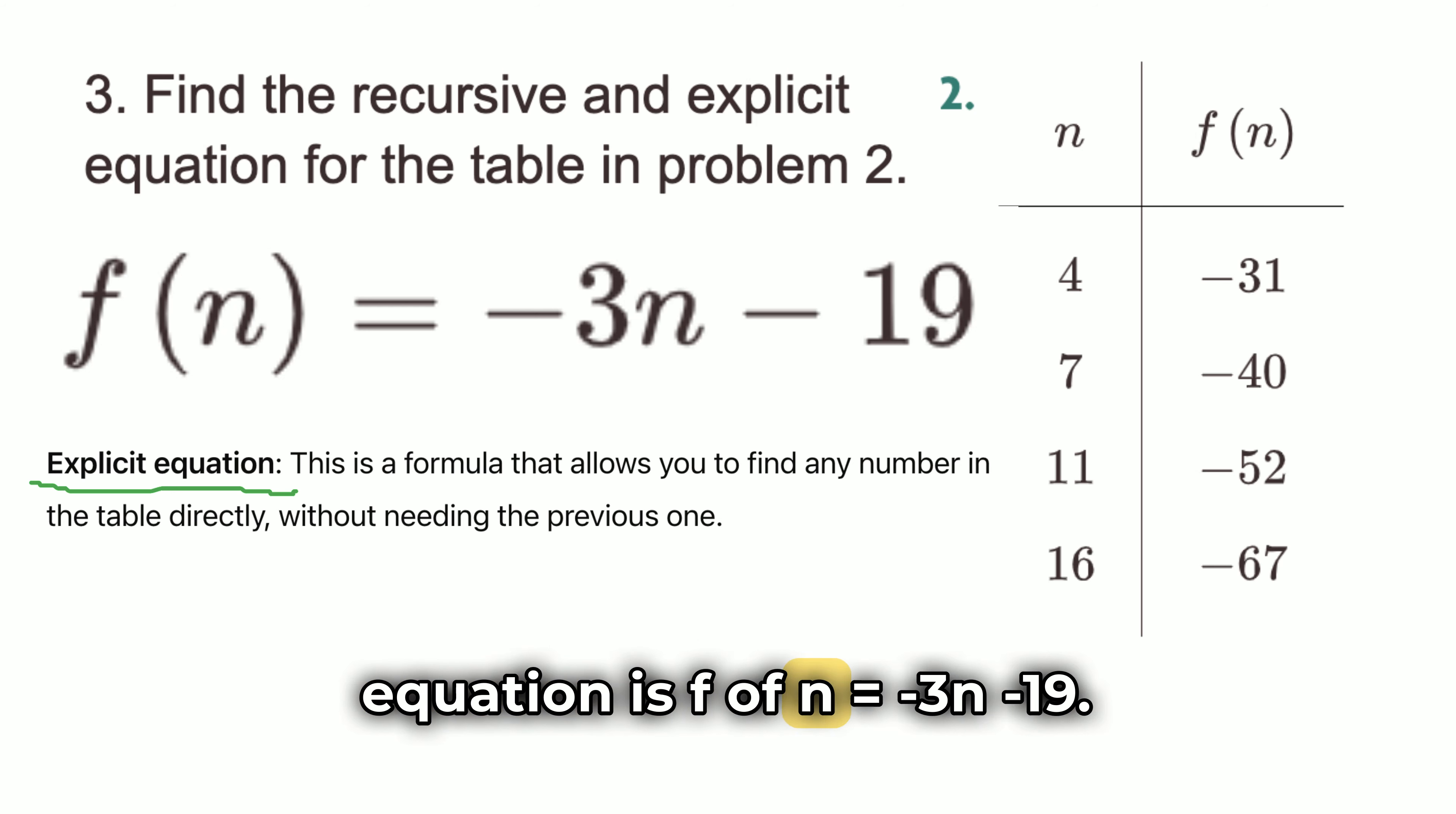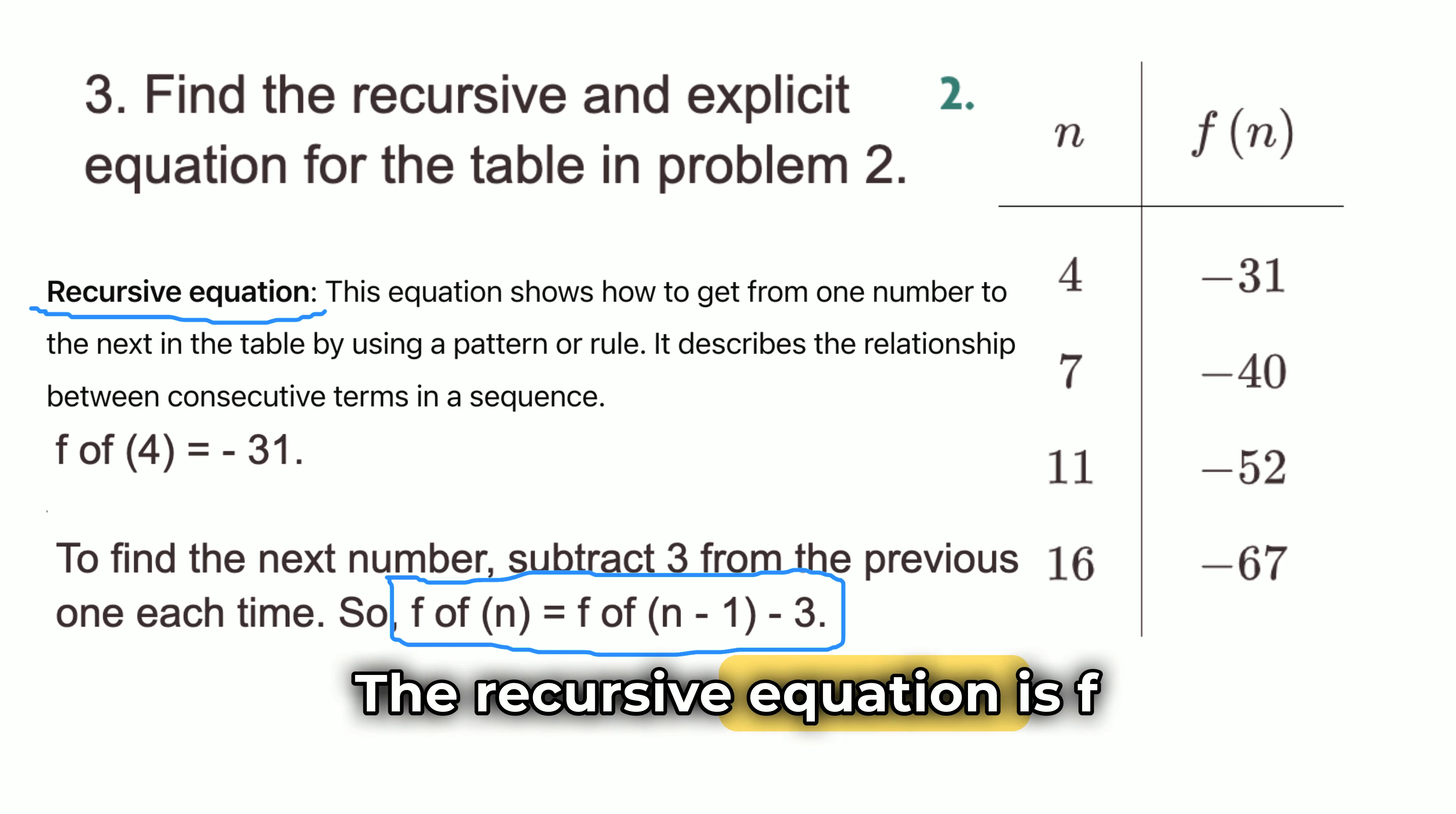To sum it all up, the explicit equation is f of n equals negative 3n minus 19, which tells you how to get f of n for any value of n. The recursive equation is f of n equals f of n minus 1 minus 3, meaning you can find each number by subtracting 3 from the one before it.